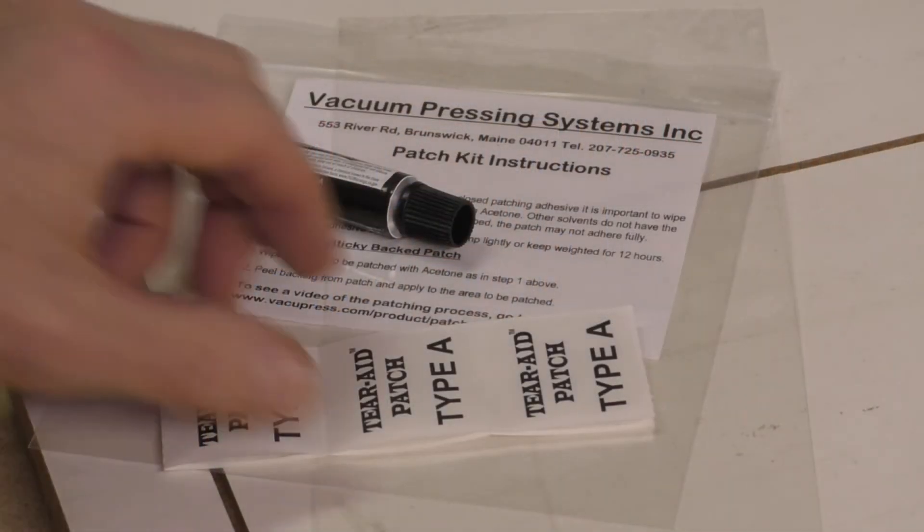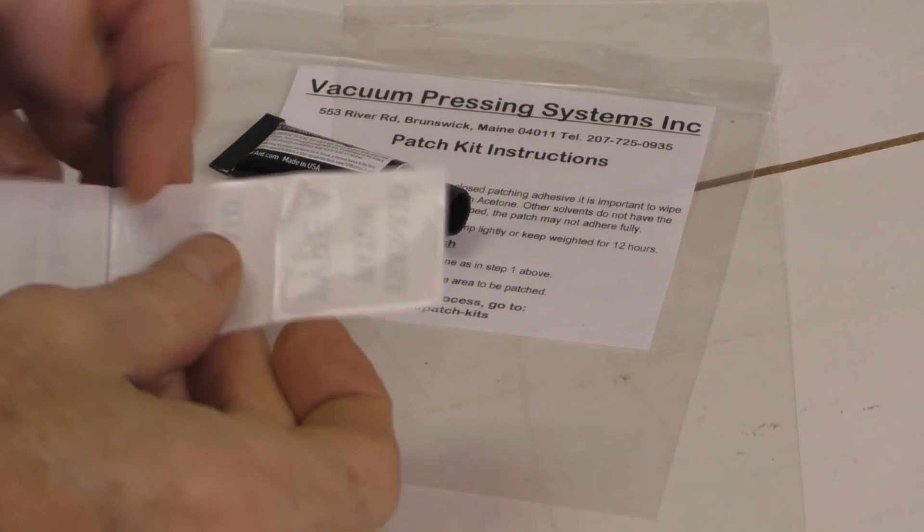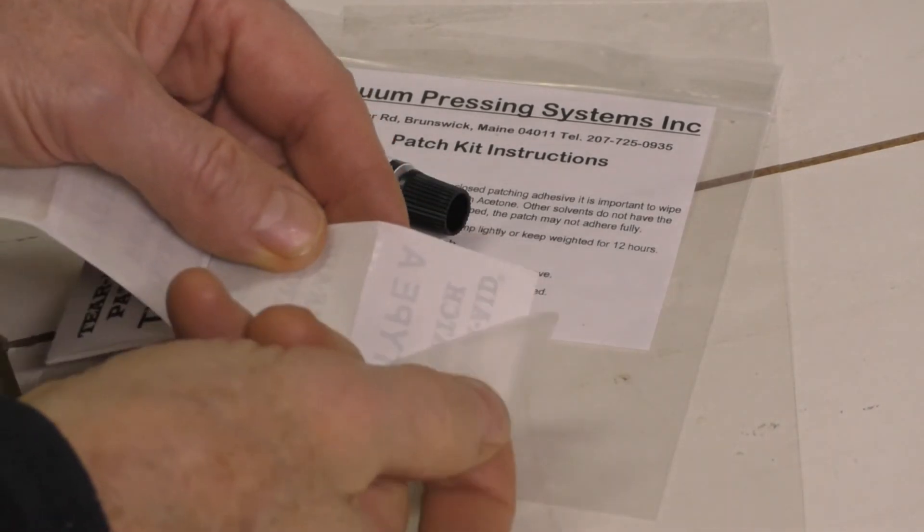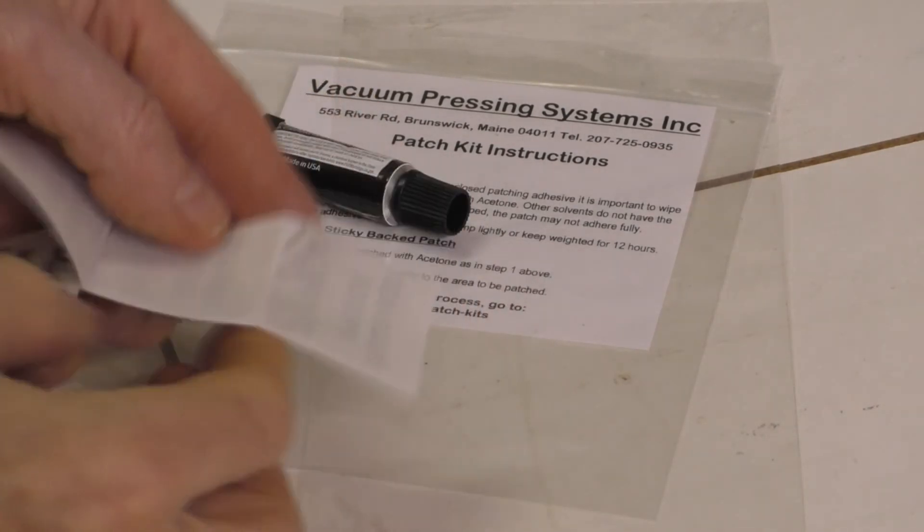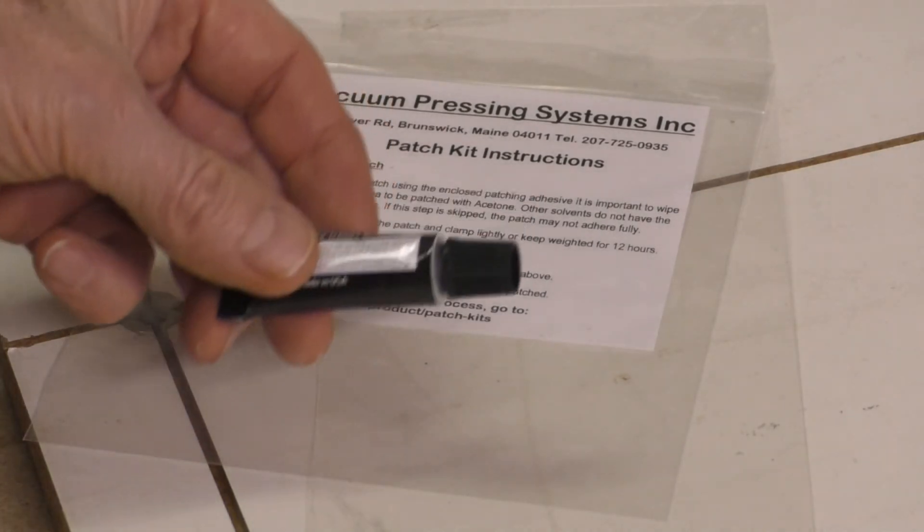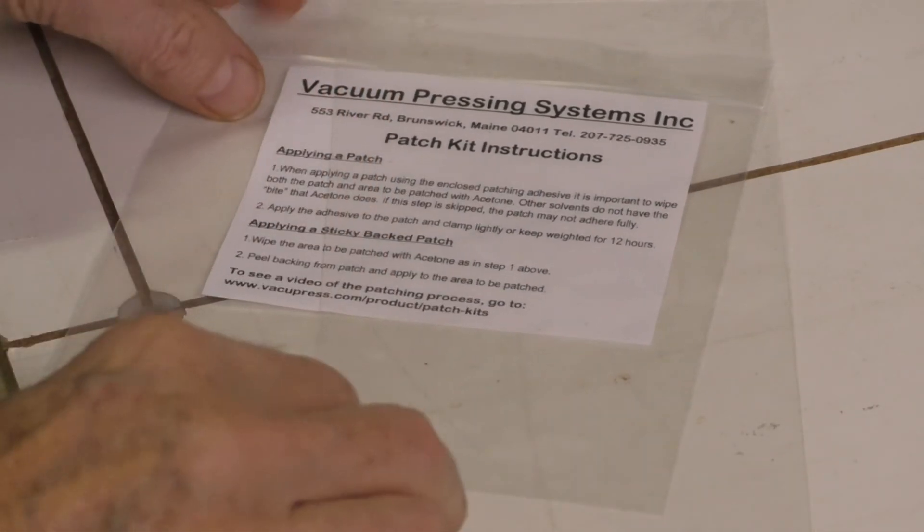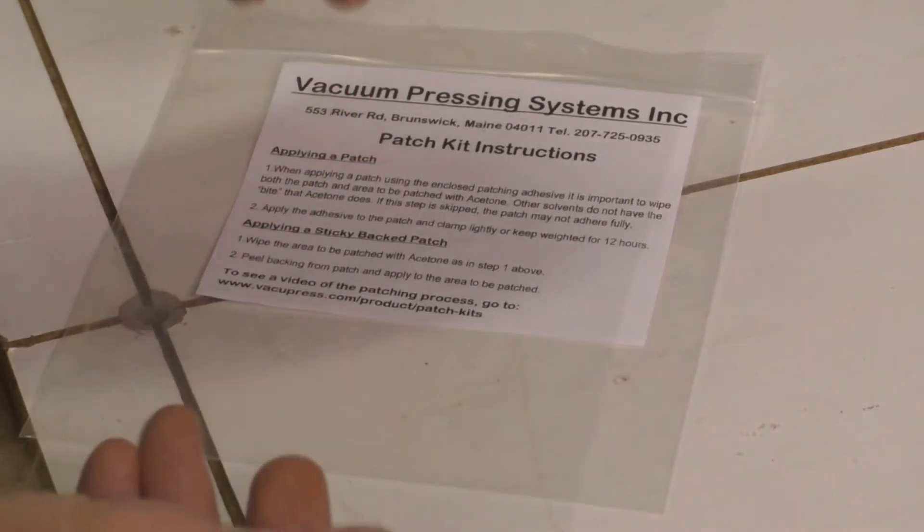So the last thing that you're going to get is a patch kit because things can happen. And this patch kit comes with little sticky back patches for really pin holes as well as a tube of glue and a piece of bag material for larger patches.